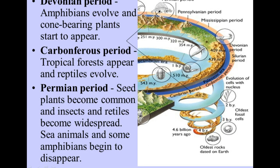Okay, next is the Devonian period. And again, you see the Devonian period marked on here where amphibians evolved and cone-bearing plants start to appear. Then there's the Carboniferous period. The Carboniferous period where tropical forests appear and reptiles evolve. And finally, you see the Permian period where seed plants become common and insects and reptiles become widespread and then sea animals and some amphibians begin to disappear.